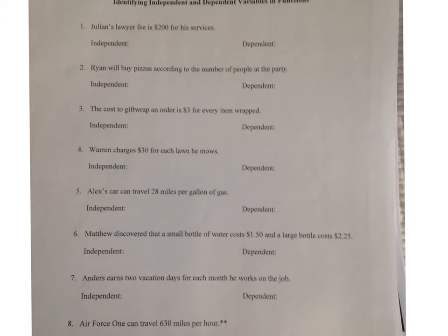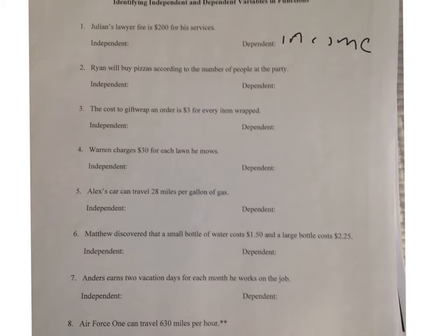For example, Julian's lawyer fee is $200 for services. So what depends on what? His income — the money he makes — depends on the number of hours or the number of services that he provides. So the sentence is: his income depends on the number of services or the number of hours he works.